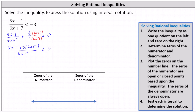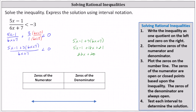Now we need to simplify the numerator. We have five x minus one plus three times the quantity six x plus seven. Clearing the parentheses gives us five x minus one plus 18x plus 21. Combining like terms: five x plus 18x is 23x, and negative one plus 21 gives us plus 20. So we can write the inequality as the quantity 23x plus 20 divided by the quantity six x plus seven, less than zero.